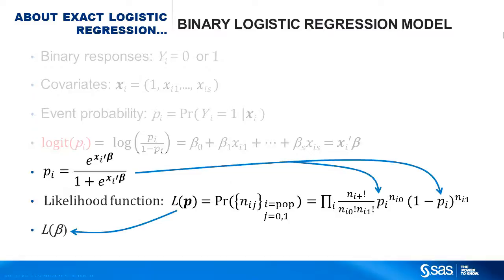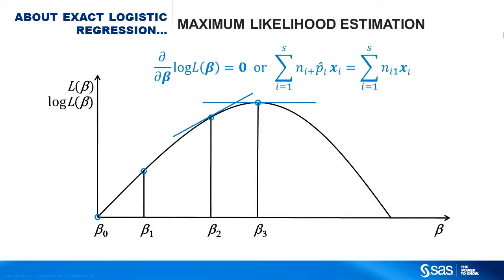Plugging the p sub i into the likelihood function expresses the likelihood in terms of the parameters in your model. Then taking the derivative of the likelihood function and solving for zero leads to the normal equations. Linear regression has a solution, x prime x inverse x prime y, but logistic does not have a closed form solution. Instead, you take an initial guess beta naught and keep stepping until you're near the optimum.